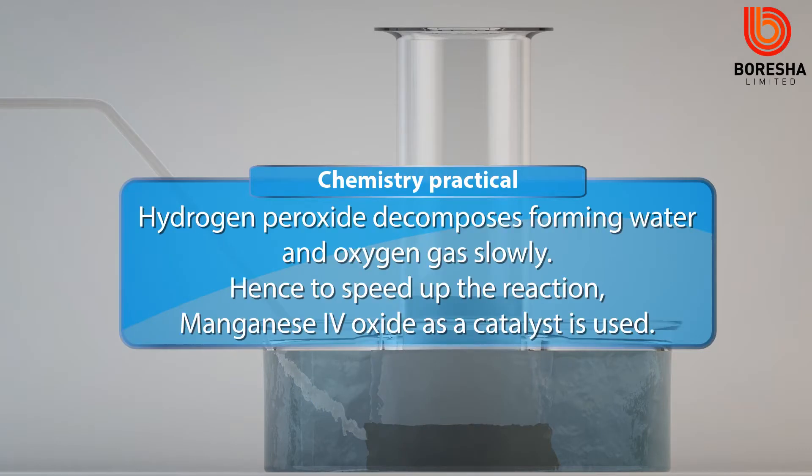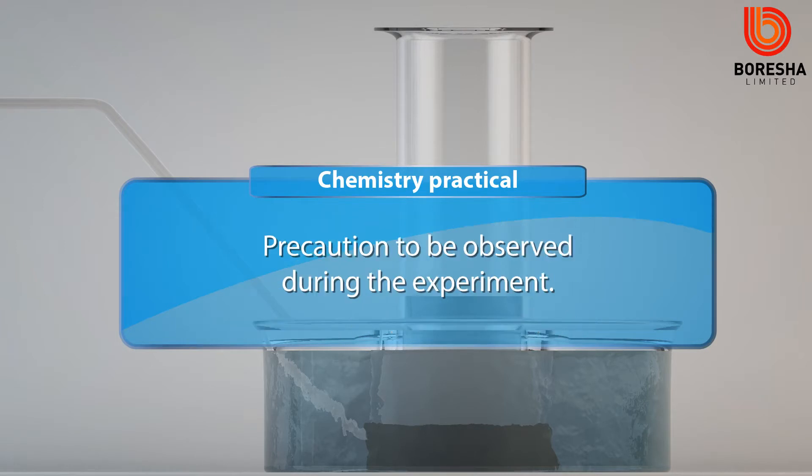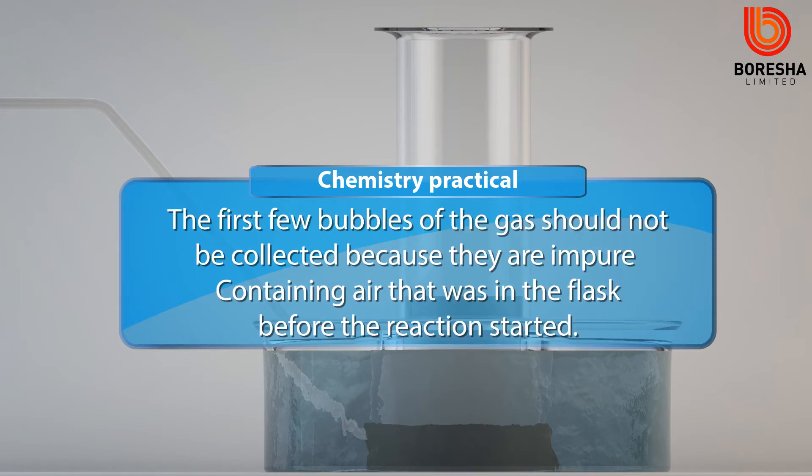Explanation: Hydrogen peroxide decomposes forming water and oxygen gas slowly, hence to speed up the reaction manganese 4-oxide as a catalyst is used. Precaution to be observed during the experiment: The first few bubbles of the gas should not be collected because they are impure, containing air that was in the flask before the reaction started.